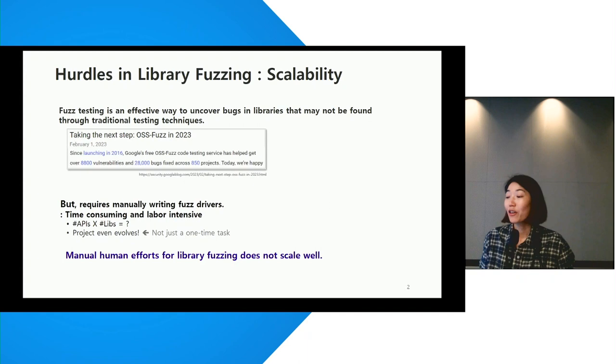Fuzz testing is an effective way to uncover bugs in libraries that may not be found through traditional testing techniques. For example, OSS Fuzz has discovered more than 30,000 bugs and vulnerabilities over the past seven years.